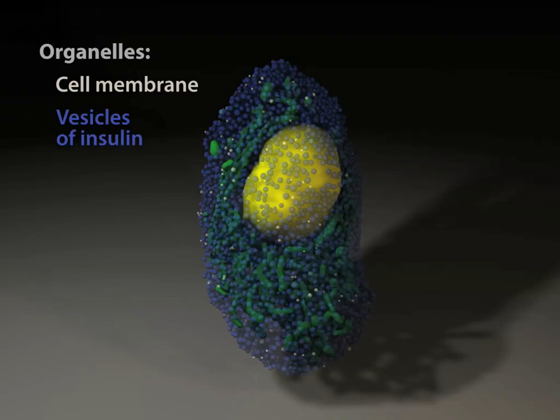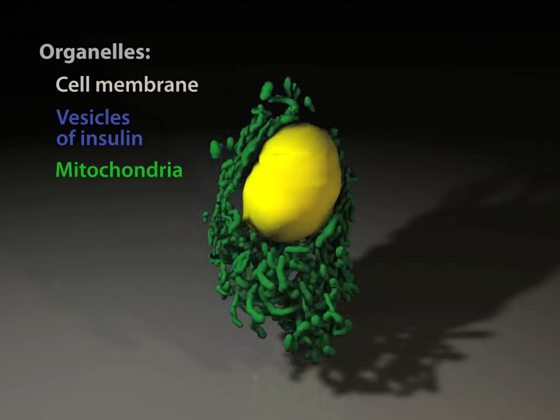Fading these blue vesicles reveals a network of mitochondria, color-coded in green, sprawled about the yellow, color-coded nucleus.